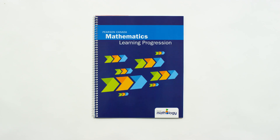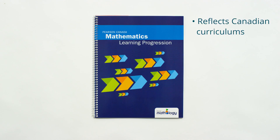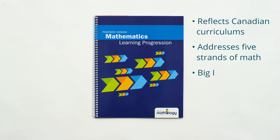The Pearson Mathematics Learning Progression is built on the big ideas of learning and teaching in math that have come out of research over the past decade and that reflect Canadian curriculums. The progression is organized by five strands of math. For each strand, there is at least one big idea. Conceptual threads that sit below the big ideas are concepts that cross strands and span several years — concepts like comparing, classifying, and estimating.